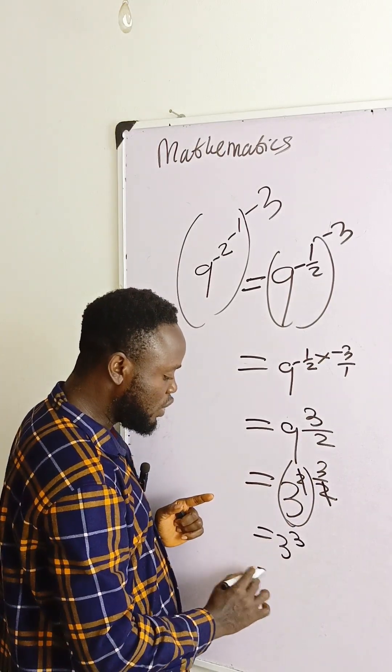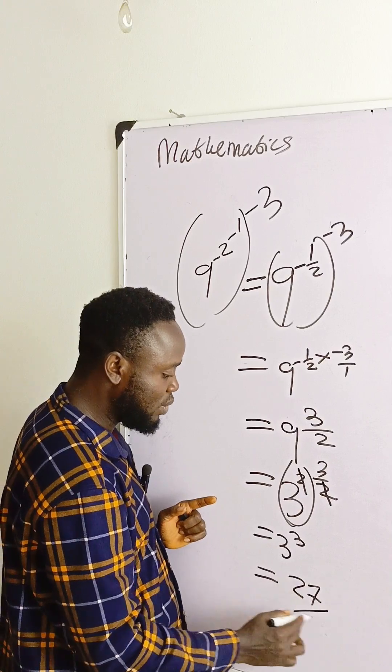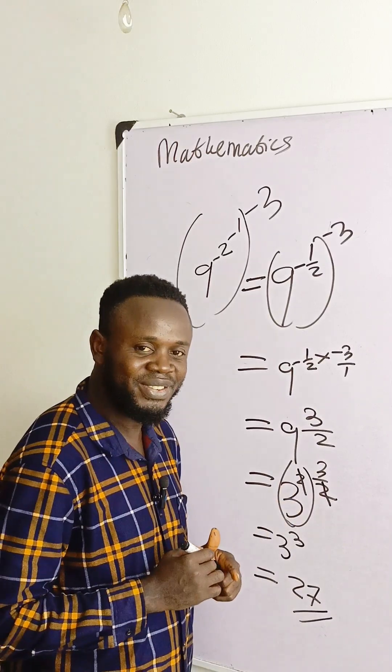And 3 raised to power 3 will give you 27 as the final answer to the equation. Thank you.